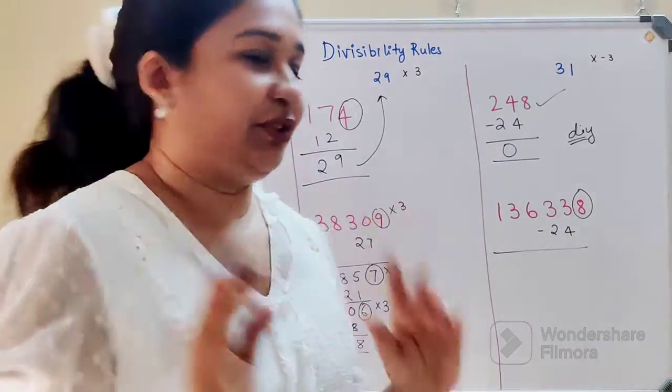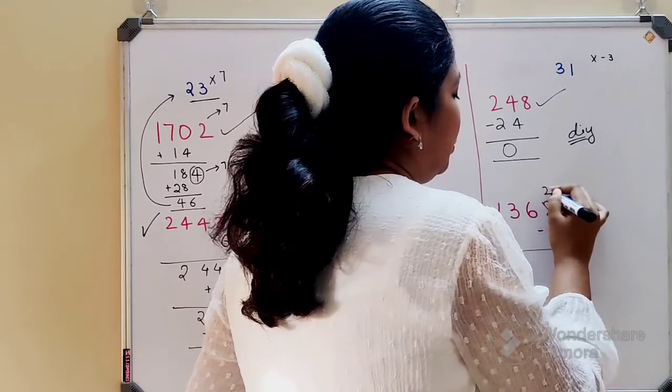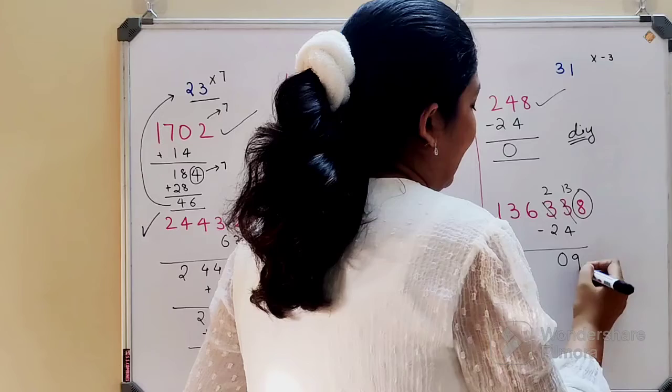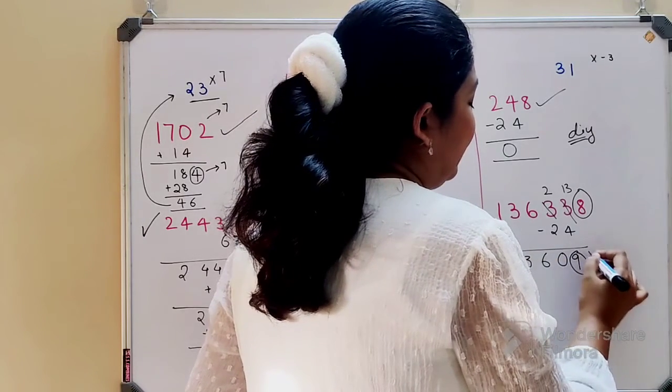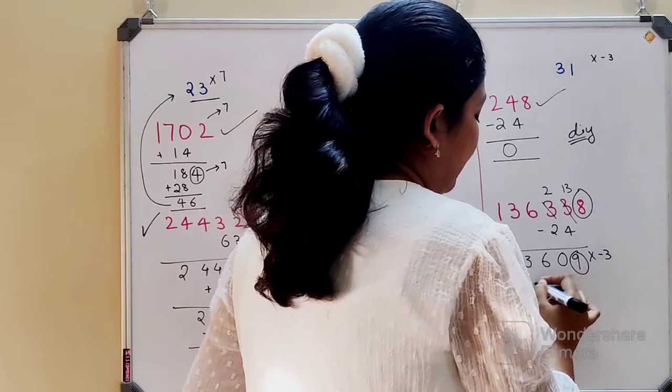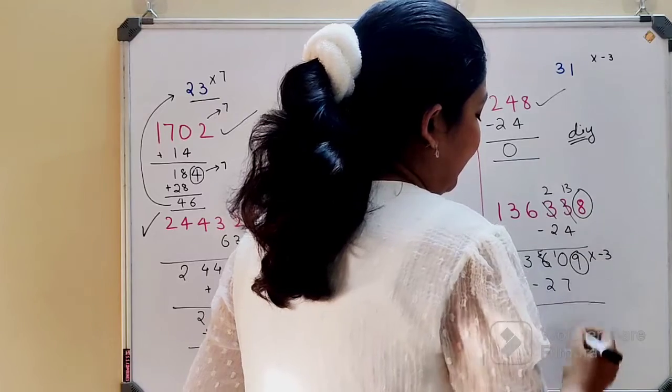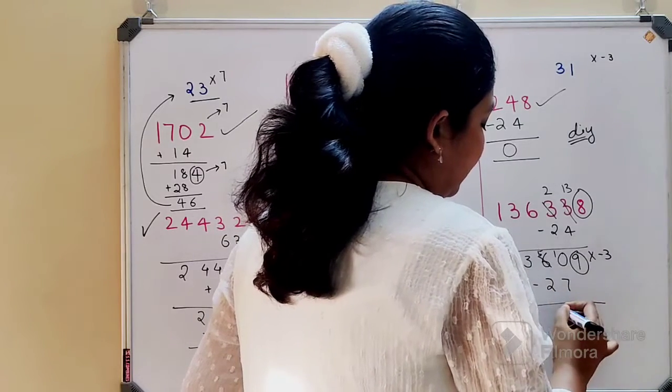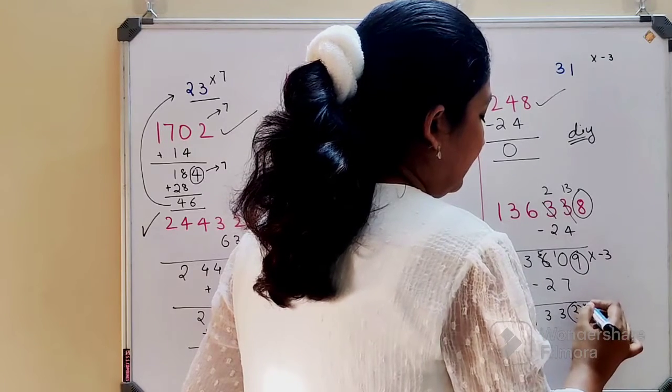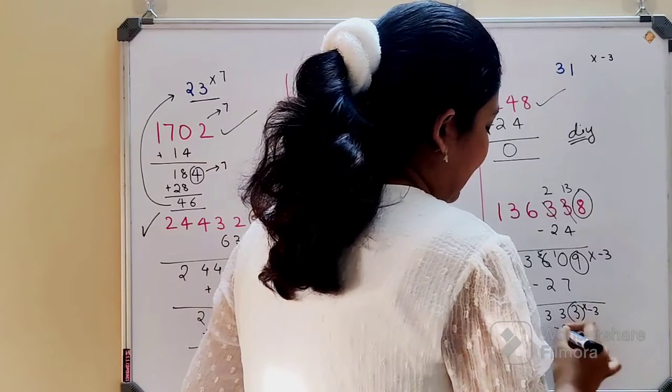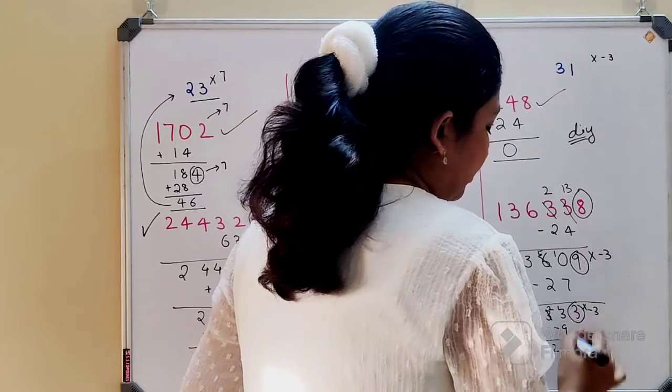After subtracting 24, this becomes 13, this becomes 2, becomes 0, becomes 9, you have 631. Multiply by minus 3 to get minus 27. This becomes 5, 5, 10, so you have 333. Multiply by minus 3 to get minus 9, this becomes 13, this becomes 12.